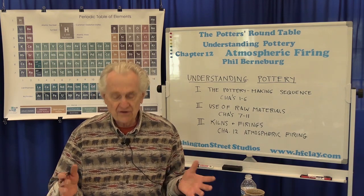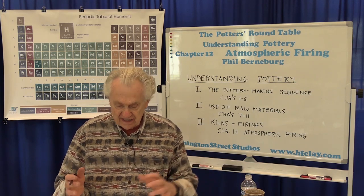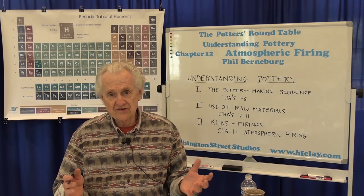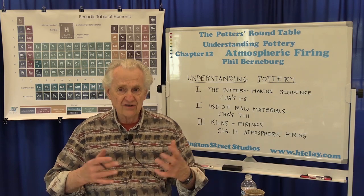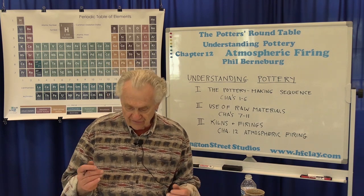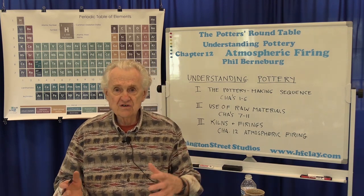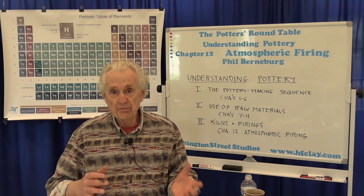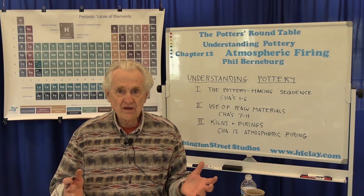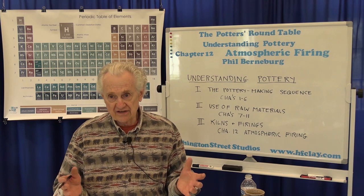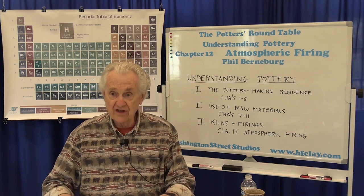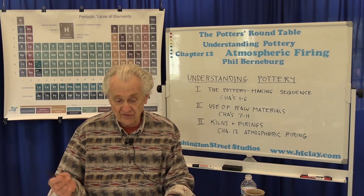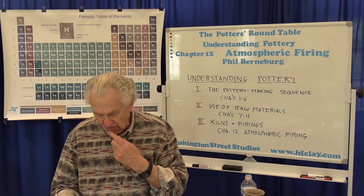For example, iron oxide — red iron oxide — in oxidation, in clay as well as in glazes, tends to give you reds and browns and tan colors. Whereas in reduction, it gives you black. And in certain glazes, it can also give you a pale green. The best example of that is the classic celadon glazes — the whole family of celadon glazes that are reduction fired. The green is due to a small amount of iron present in the glaze.